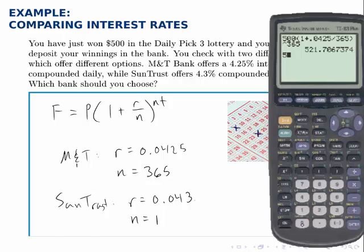If I do the same calculation with the other account, 500 times 1 plus 0.043 divided by 1, raised to the 1, because there N is just 1, that account will hold $521.50.